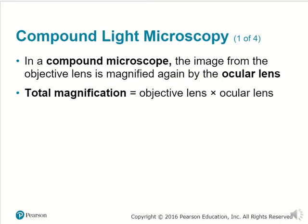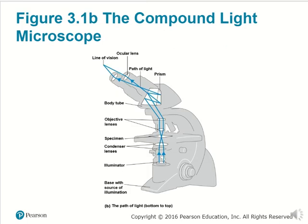In a compound microscope, the image from the objective lens is magnified again by the ocular lens. Whatever the objective lens is — 40x, 10x — multiplied by the eyepiece, which is typically 10x, gives total magnification. This details how light travels from underneath your specimen through a light source, and then eventually gets reflected in many ways to help magnify it, eventually reaching the eyepiece and into your vision. When using a compound light microscope, you should position the eyepieces so that each eye is looking into an ocular lens, to help prevent damage.